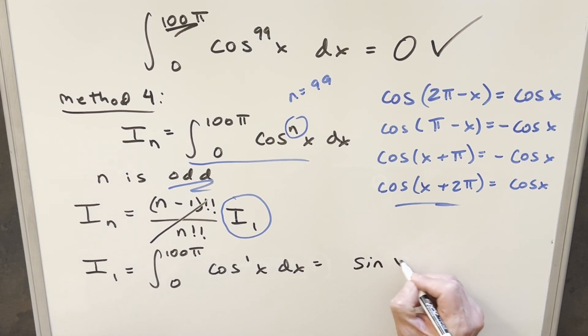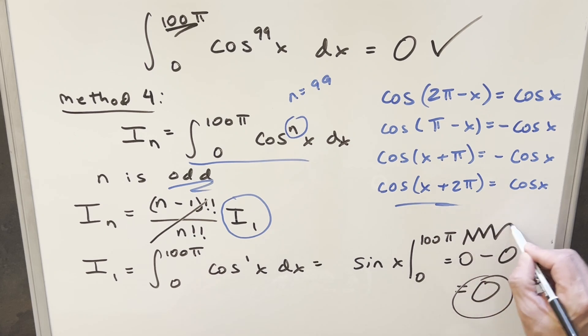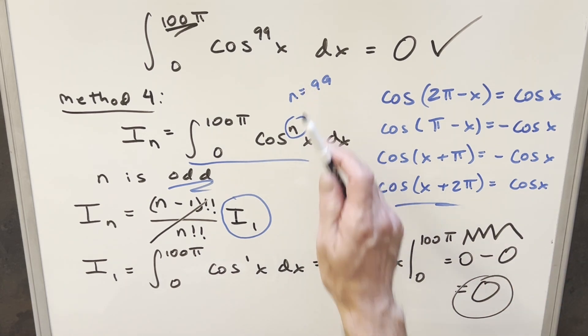We get sine x from 0 to 100 pi. But sine at 100 pi is 0. Sine at 0 is 0. So the whole integral is just 0. This looks like a guy's face. I think this way is pretty nice. You don't have to deal with the exponent at all. You just go right to integrating cosine. So two or three steps real quick.